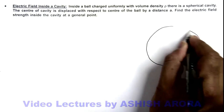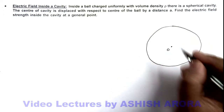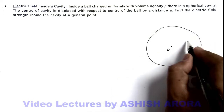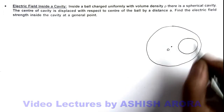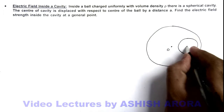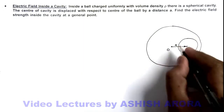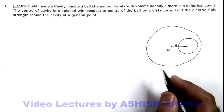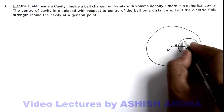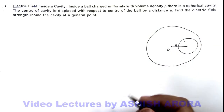If we draw the situation, this is a spherical ball with center O. We have a cavity which is off-center from this ball, and the center of the cavity is displaced by a distance a. We wish to find out the electric field at a general point P inside the cavity.